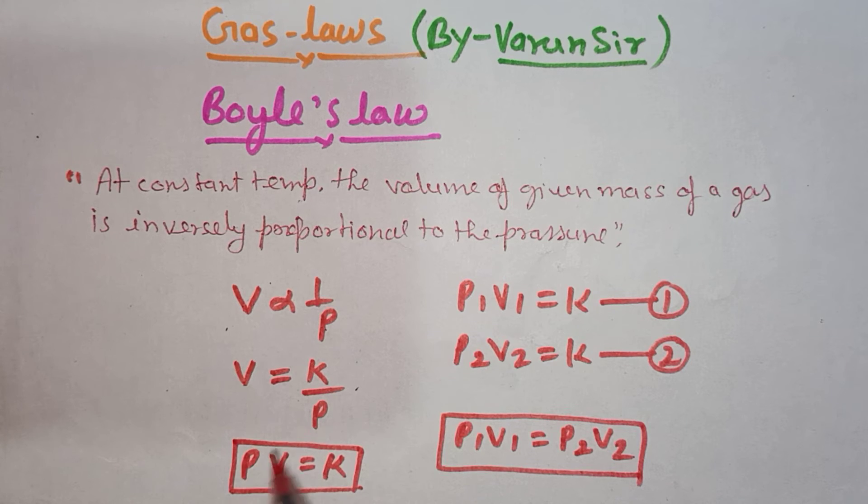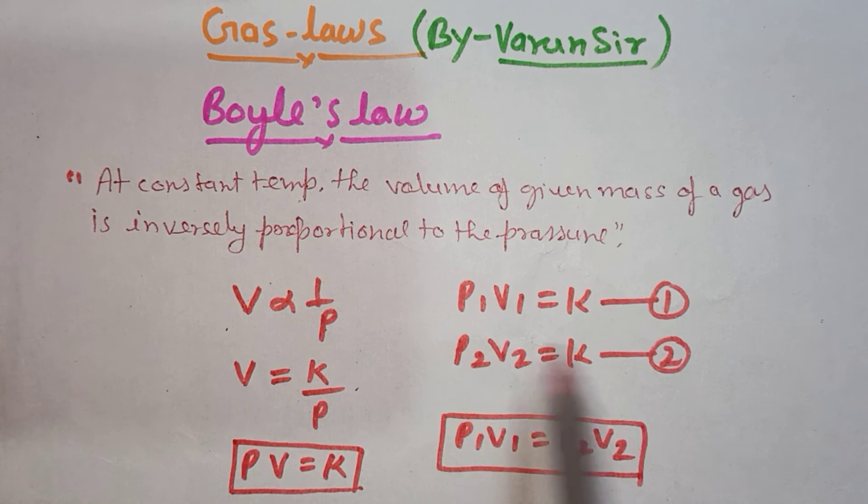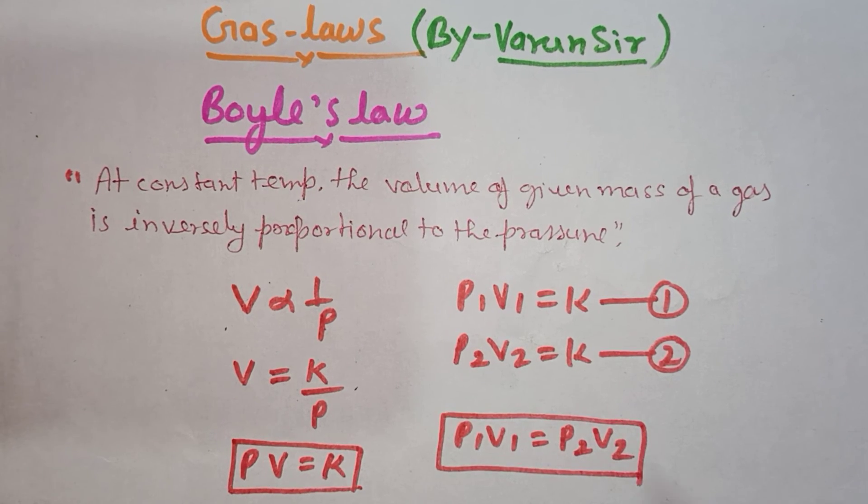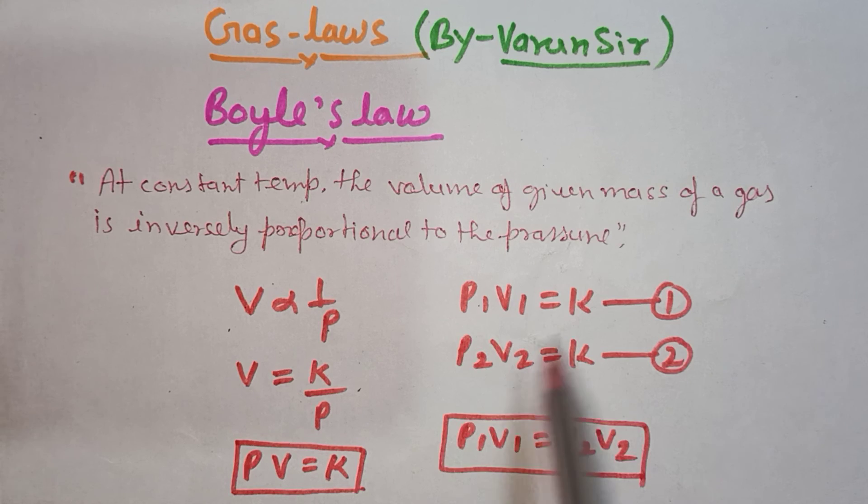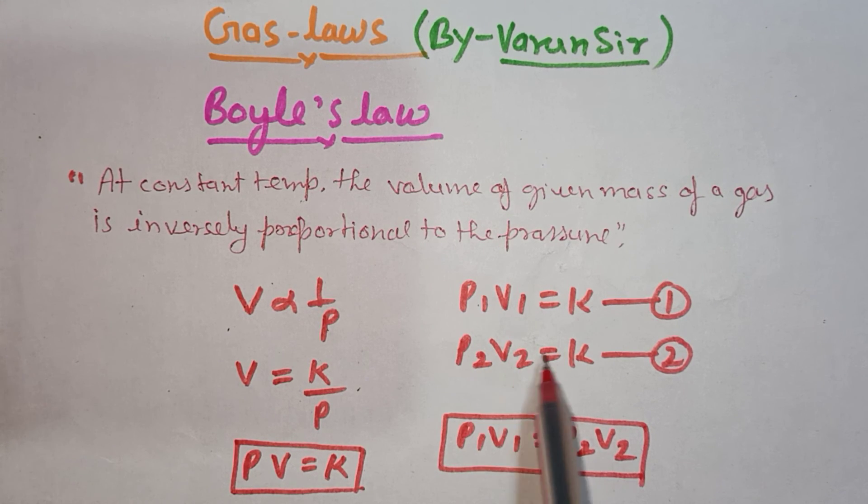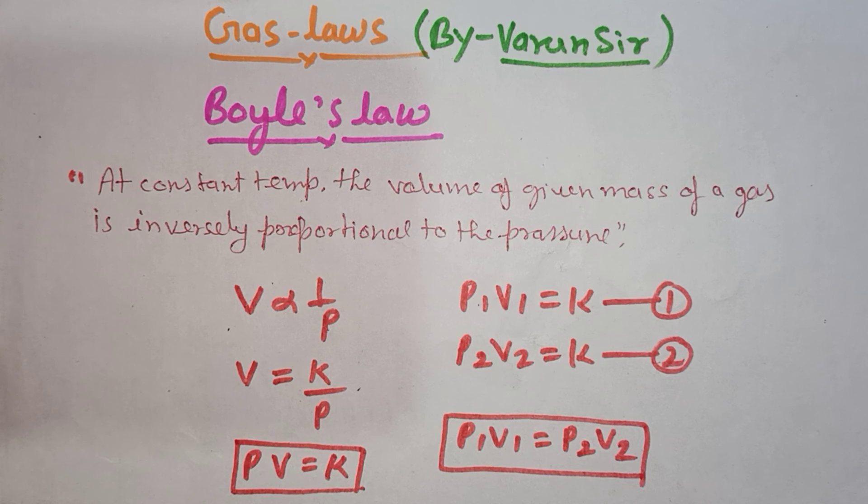اور pressure کو volume میں multiply کر دیں گے تو PV is equal to K. یہ standard equation بن گئی. اب مان لو ایک سے زیادہ gases ہیں. First gas کے لیے P₁V₁ is equal to K. Second gas کے لیے P₂V₂ is equal to K. دونوں کو solve کریں گے تو ہمیں مل جائے گا P₁V₁ is equal to P₂V₂.